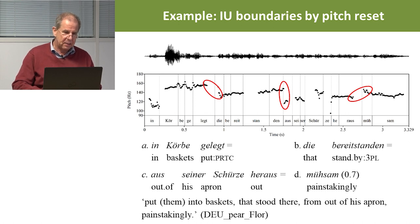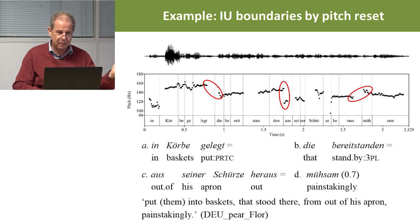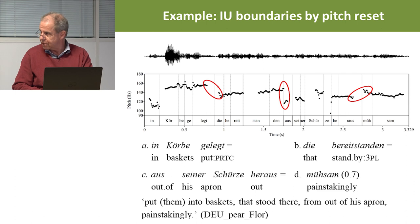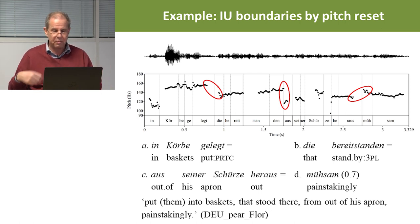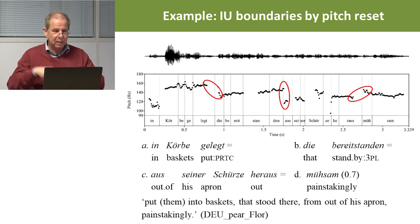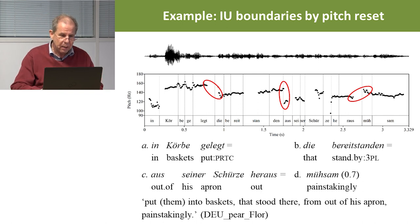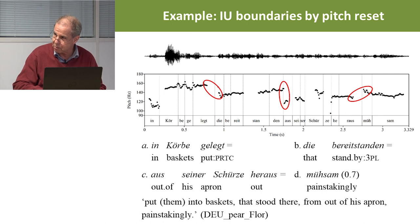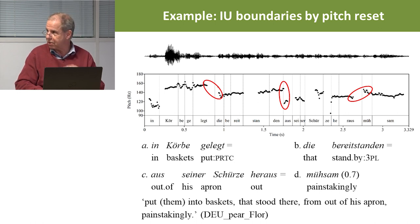The first intonation unit says something like 'hat er die Birnen in Körbe gelegt' — put into baskets. 'Die Bereitstanden' is the second. 'Aus seiner Schürze heraus' — out of his apron — is the third, and the fourth is a single adverb meaning 'painstakingly.' Overall the whole thing means: the man put the pears into the baskets that stood there, from out of his apron, painstakingly. The intonation units end at a certain pitch level and the next one starts at a different one.